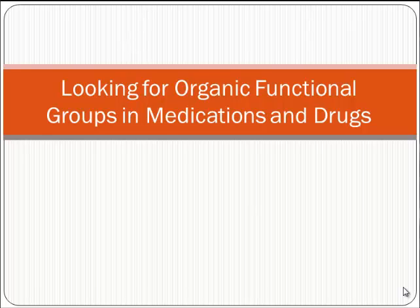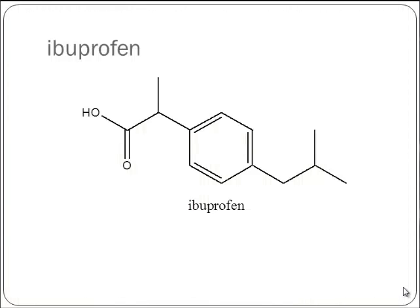Let's go looking for organic functional groups in some medications and drugs. The goal is to recognize the cluster that makes an area of the molecule belong to a certain functional group family. Here's the drug ibuprofen — an over-the-counter NSAID analgesic and fever reducer. When looking for functional groups, remember to look for heteroatoms — things other than carbon — and also unusual bonds. We just seem to have a lot of carbon-to-carbon single bonds otherwise, and we never use the family alkane unless there's nothing else going on in the molecule.